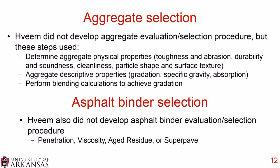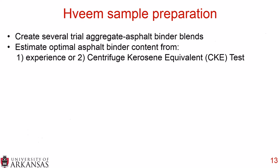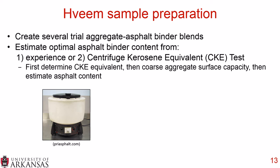For the asphalt binder selection, much like the aggregate selection, Hveem did not develop a specific asphalt binder evaluation or selection procedure, but most agencies that use the Hveem mix design use tests such as penetration, viscosity, aged residue, or Superpave to determine their asphalt binder selection. When preparing Hveem samples, you first create several trial aggregate asphalt binder blends, then estimate the optimal asphalt binder content from either experience or the centrifuge kerosene equivalent (CKE) test.